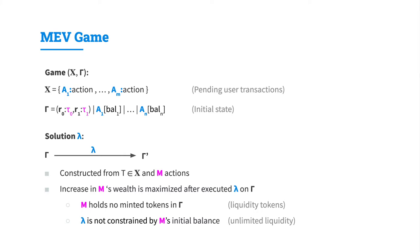Next, we define the MEV game. The MEV game is parameterized by the pending user transaction set X and the initial state γ. The initial state γ is given by the reserves of the AMM — R0 units of τ0 and R1 units of τ1 — as well as the balances of users in the system. The solution λ to the MEV game is performed on the initial state γ, resulting in state γ prime, constructed from transactions in the pending pool X and any authorized action by the adversary M. The adversary does not hold any minted tokens initially and has unlimited liquidity to perform the attack.